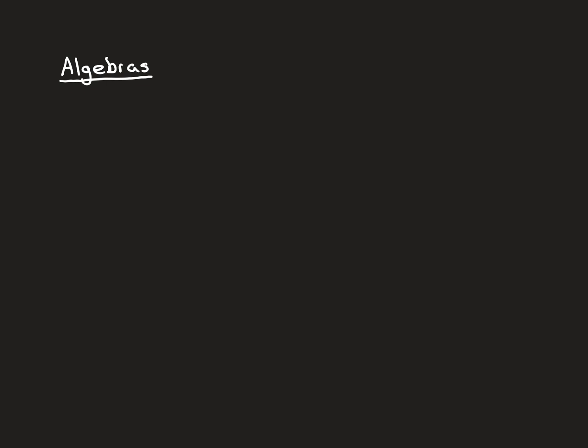Let's just remind ourselves of what the definition of an algebra is. We have some set x for which we are creating an algebra over that set, and we will denote the algebra by curly A. Remember that it is a subset of the power set of x. If you take for your algebra — or indeed your semi-algebra — the entire power set of x, that will always satisfy all of the definitions for both semi-algebra and algebra. So there's always at least one algebra and indeed semi-algebra for any set, which is the power set.